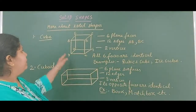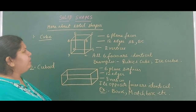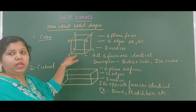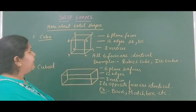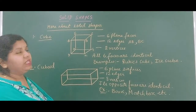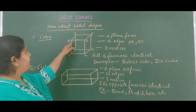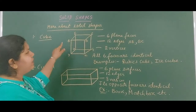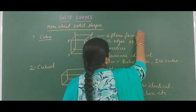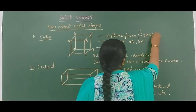A cube has 8 vertices and 12 edges, and 6 plain faces. Each plain face looks like a square, so all faces are square-shaped.